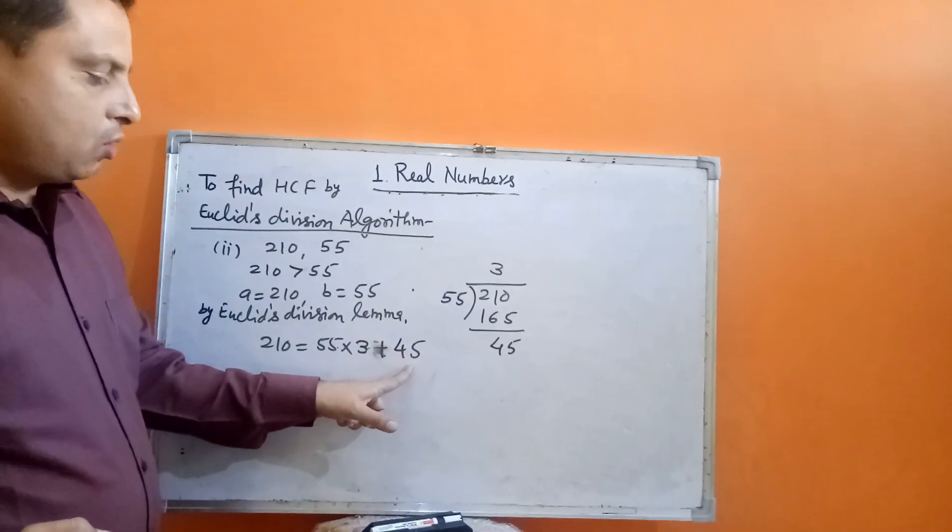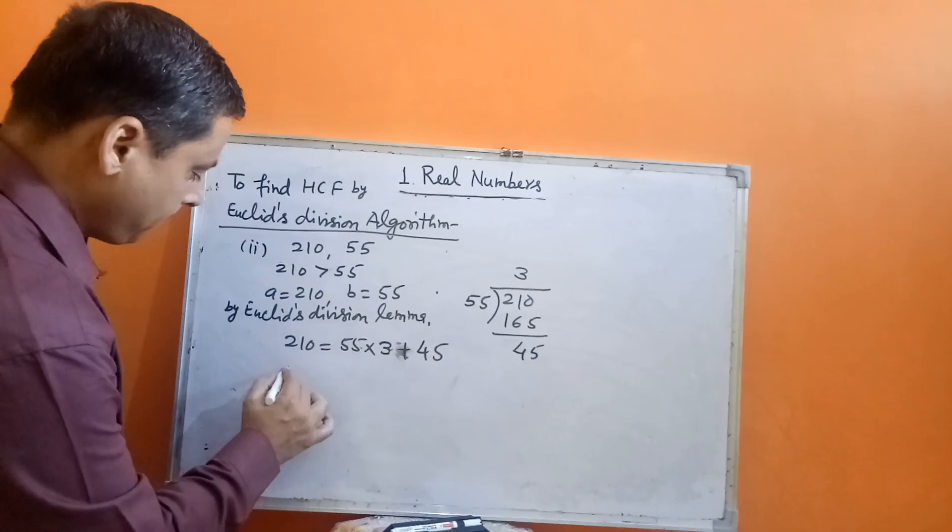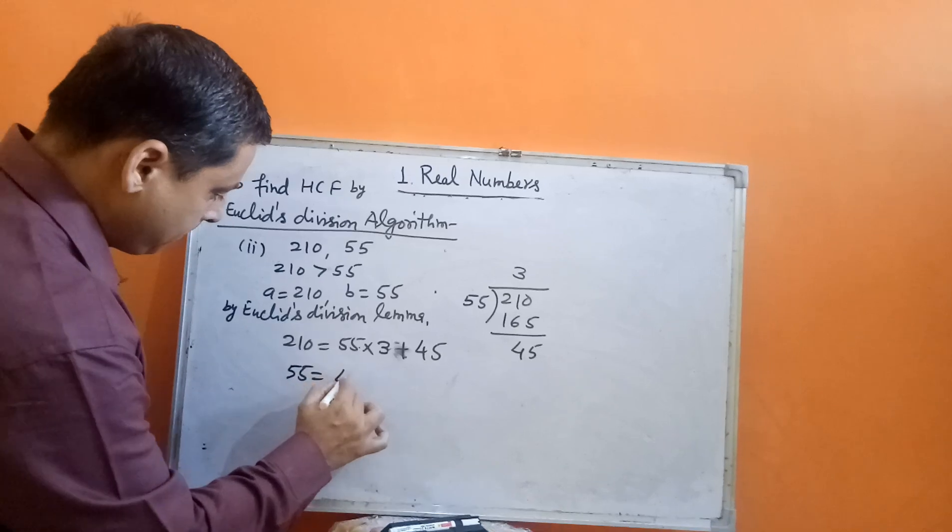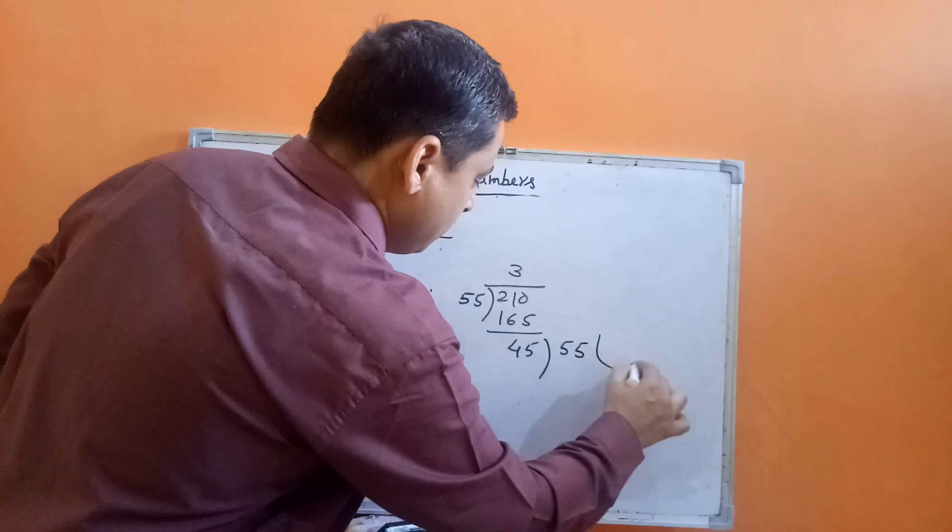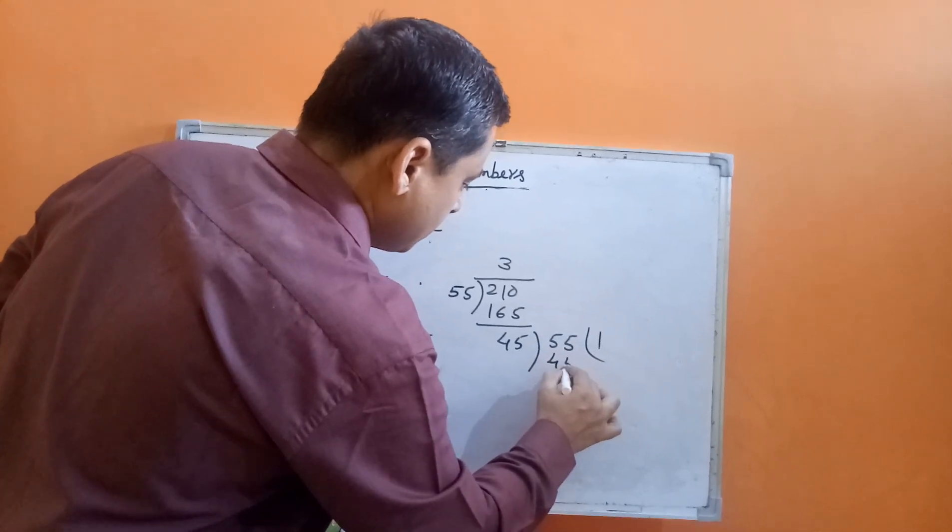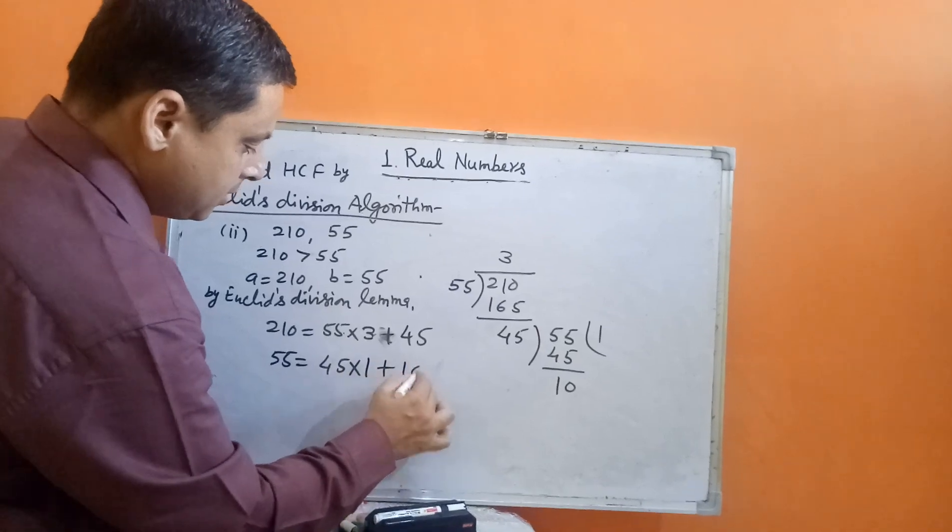At this step, remainder is not 0, so we will apply the same process on 55 and 45. We will divide 55 by 45 one time. The remainder is 10.